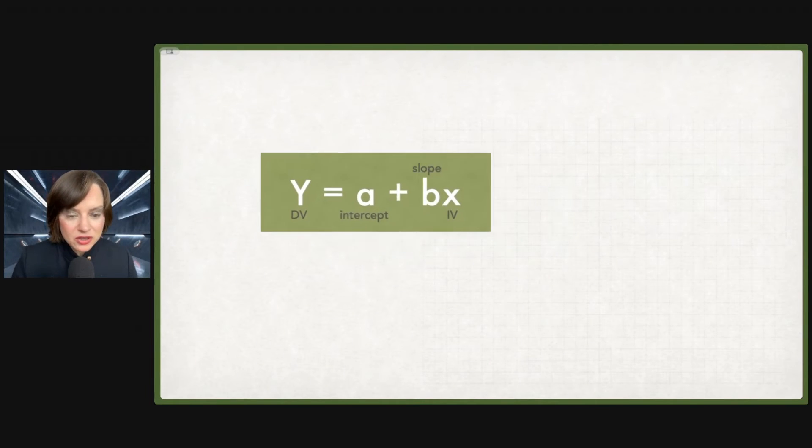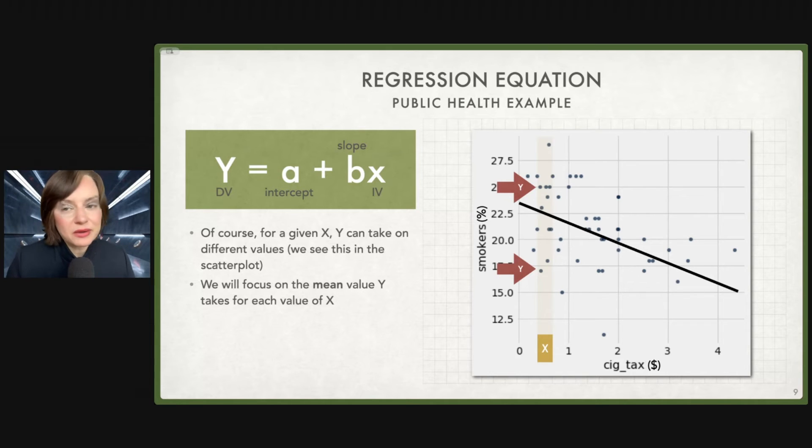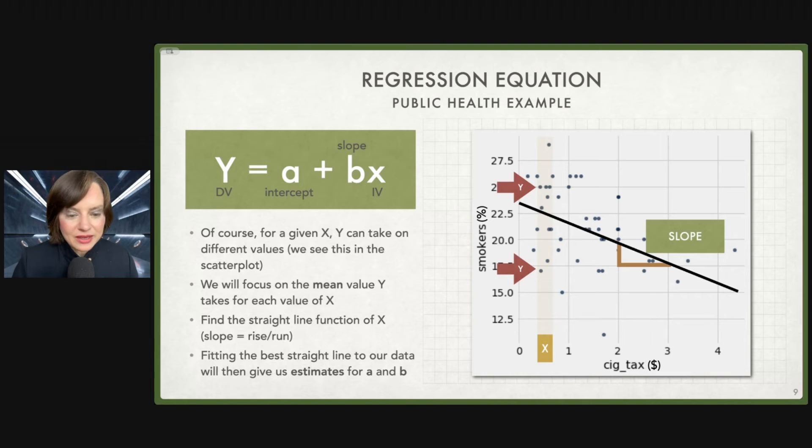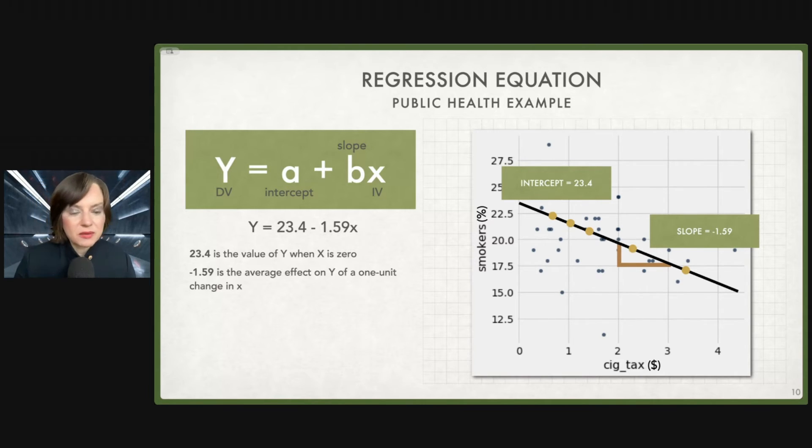Taking a closer look, this is the linear regression equation, and we can be more specific about how to interpret this. Of course, for a given X in our graph right here, Y can take on different values. So for example, if X is one half, we see multiple possible outcomes. We see that the smoking rate for some states, you have smoking rates as low as 17.5 and all the way as high as 28 and above. So Y's can take on lots of different values for any given X in our data. This is where the mean comes in, the typical value for Y. Fitting the best fit line to our data will then give us the estimates. Our intercept is 23.4. Our slope is minus 1.59.